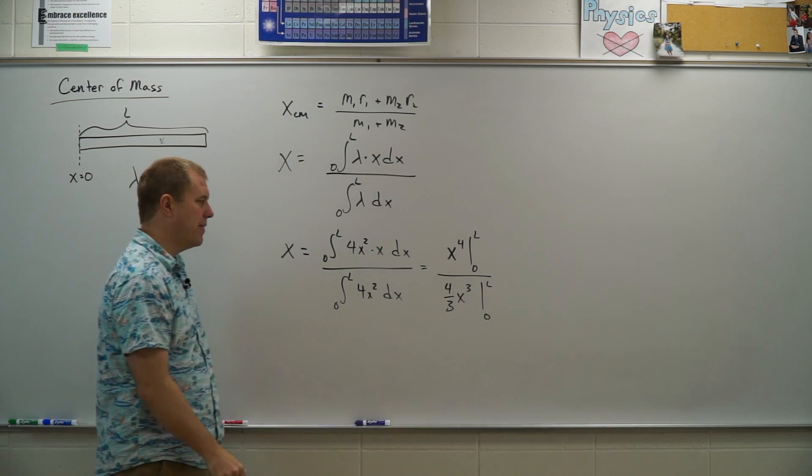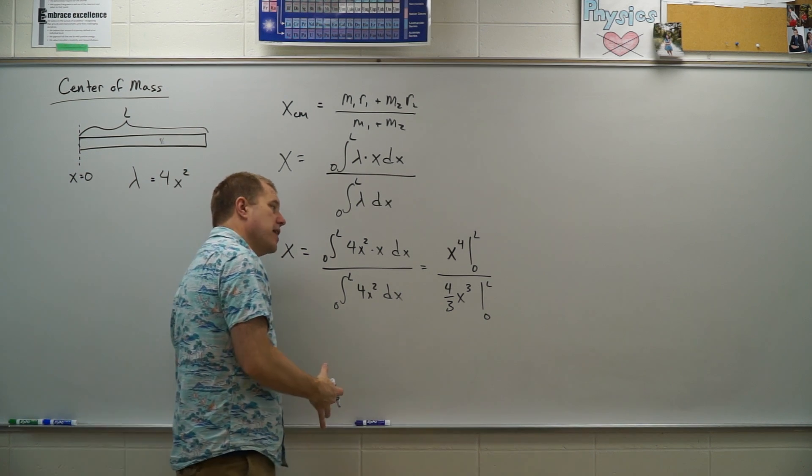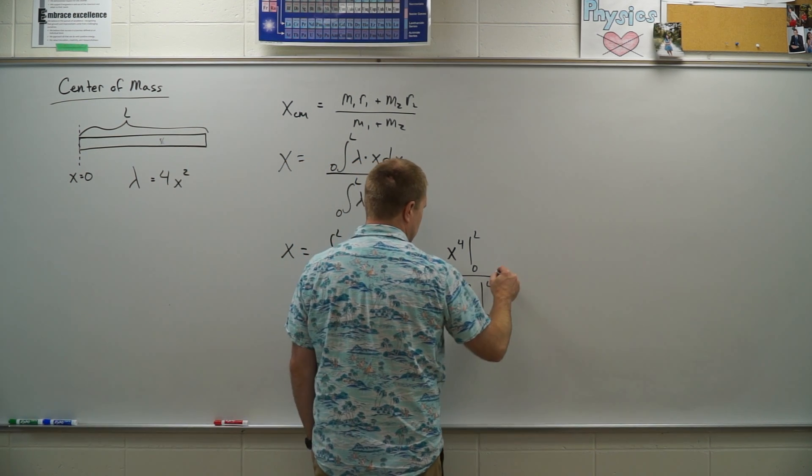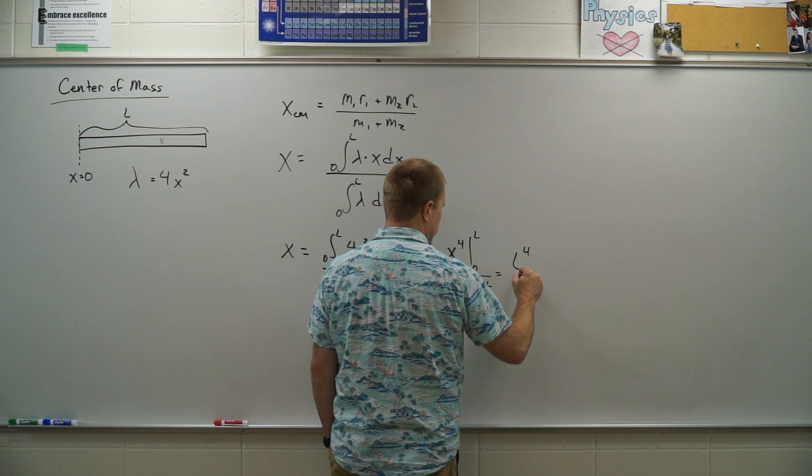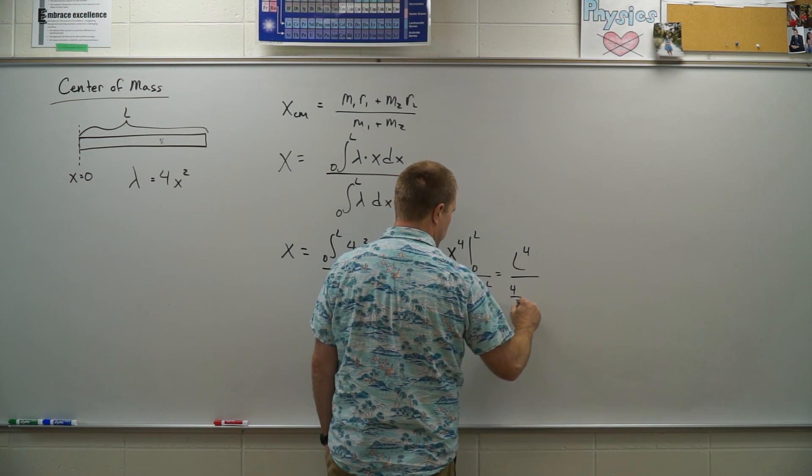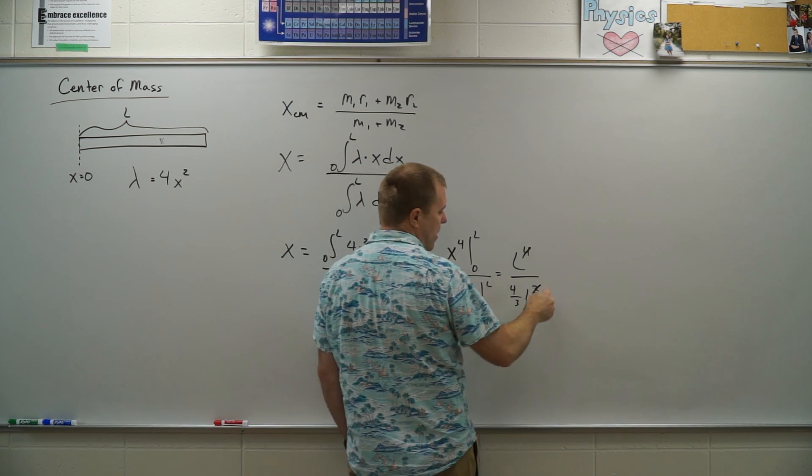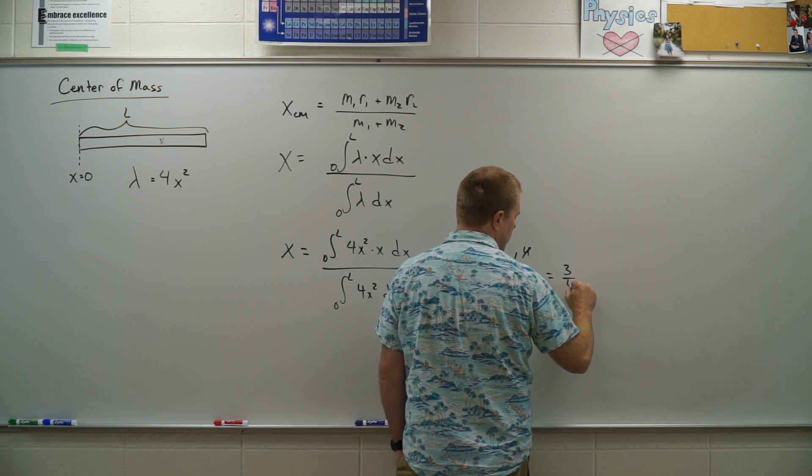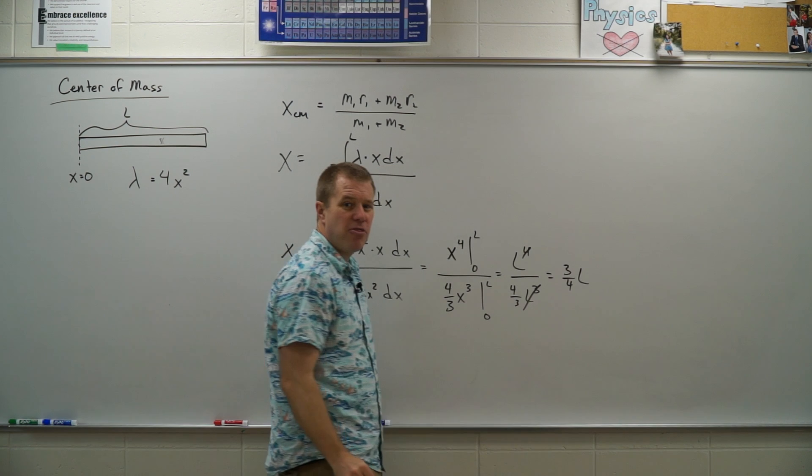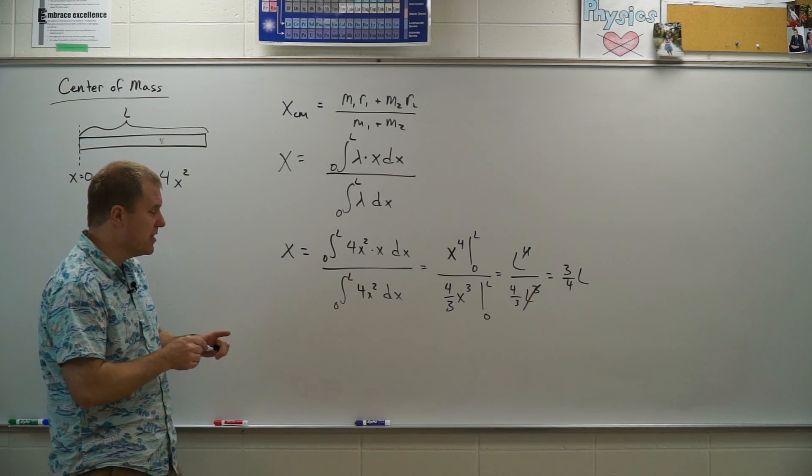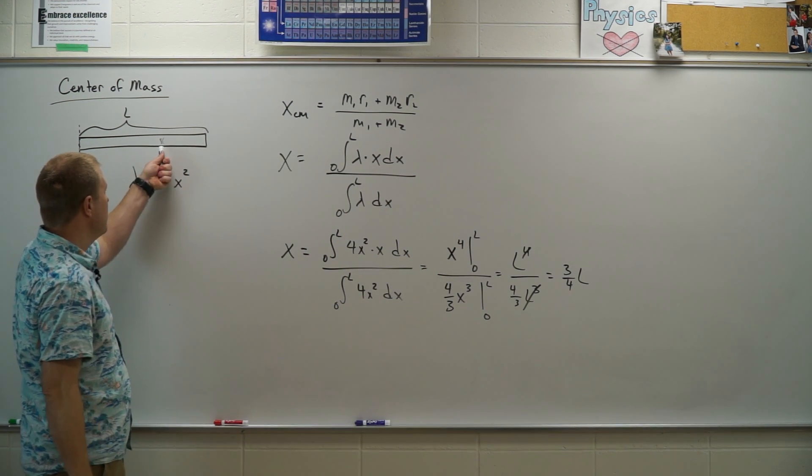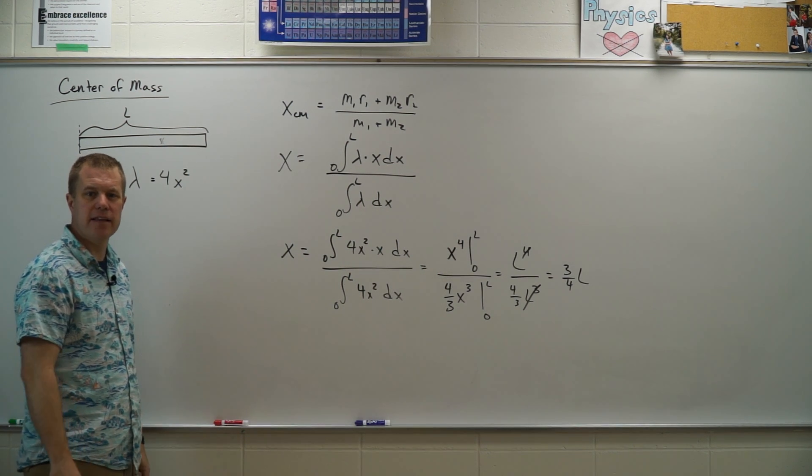Notice that the four is cancelled out on that top one. So we plug in our Ls. And so I'm left with L to the fourth divided by four thirds L to the third. A lot of our Ls cancel. Dividing by four thirds is the same as multiplying by three fourths. And so I'm at three fourths L is the location of the center of mass. And is that pretty reasonable? Yeah, I'd say that's pretty reasonable.